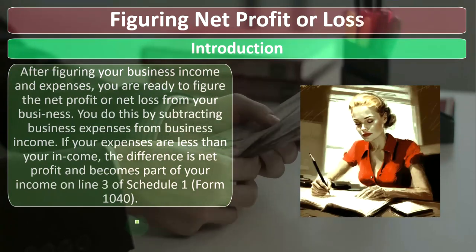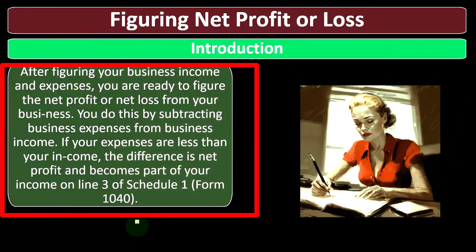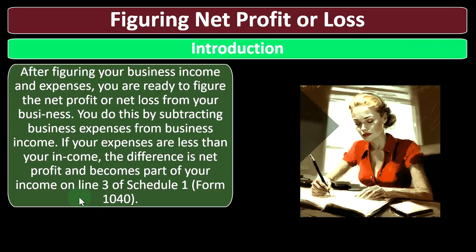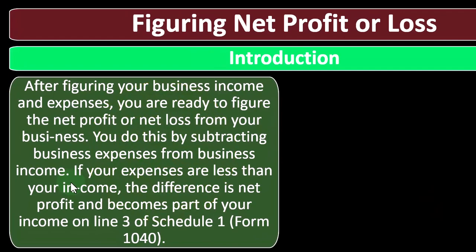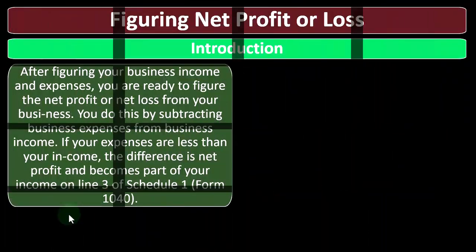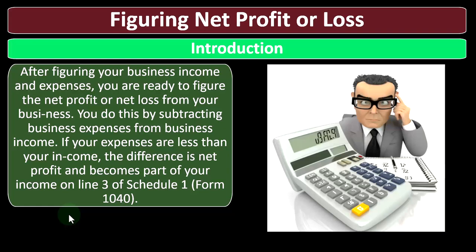Figuring net profit or loss — introduction. After figuring your business income and expenses, you are ready to figure the net profit or loss from your business. You do this by subtracting business expenses from business income. It is an income statement structure where income minus expenses gives you net income or loss. If your expenses are less than your income, the difference is net profit and becomes part of your income on line three of Schedule 1, Form 1040.